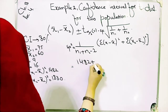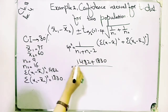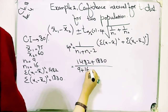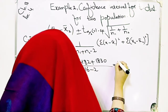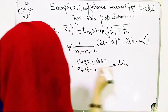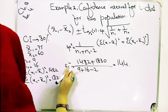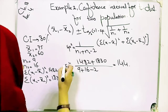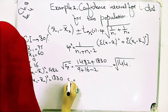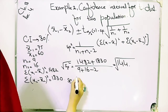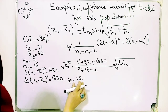We have 14.82 plus 18.30, with n₁=9 and n₂=16, divided by minus 2. When you solve this, the answer — sp² — is 144. But we need sp, not sp squared. So we take the square root, which gives us sp = 12.